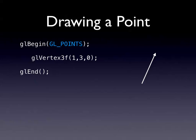To render a point in OpenGL: GL_Begin, tell it you want to make a point with GL_POINTS, then list off your vertices. In this instance we have one vector with coordinates (1, 3, 0) - meaning across one, up three, in zero. GL_End produces a point on your screen.